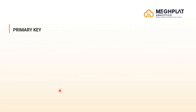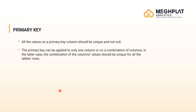Let's see what a primary key is and how it is used. All the values in a primary key column should be unique and not null. The primary key can be applied to only one column or on a combination of columns. In the latter case, the combination of the column values should be unique for all the table rows.